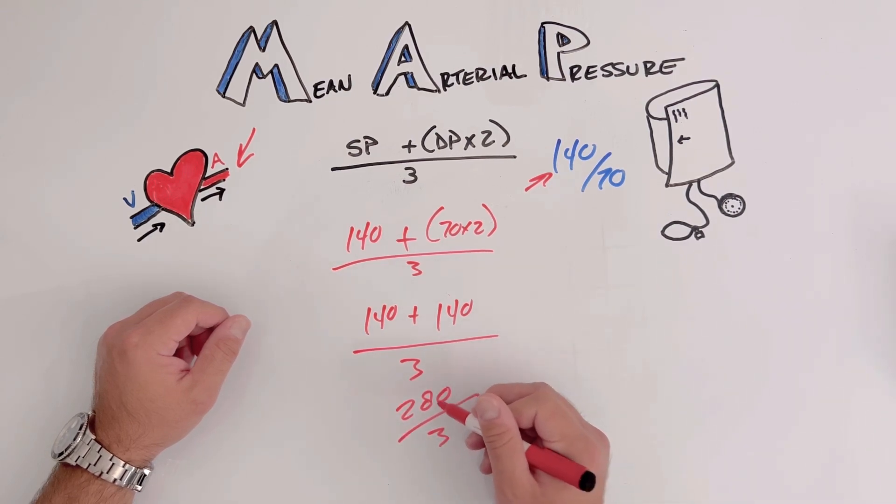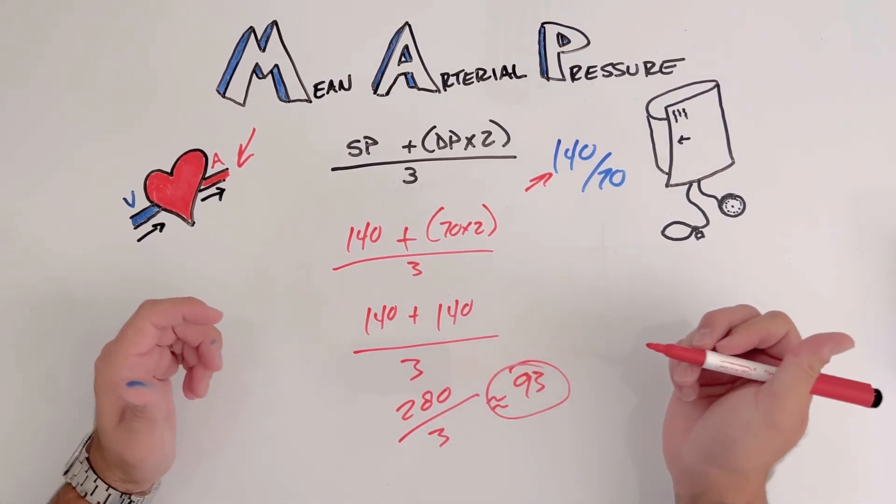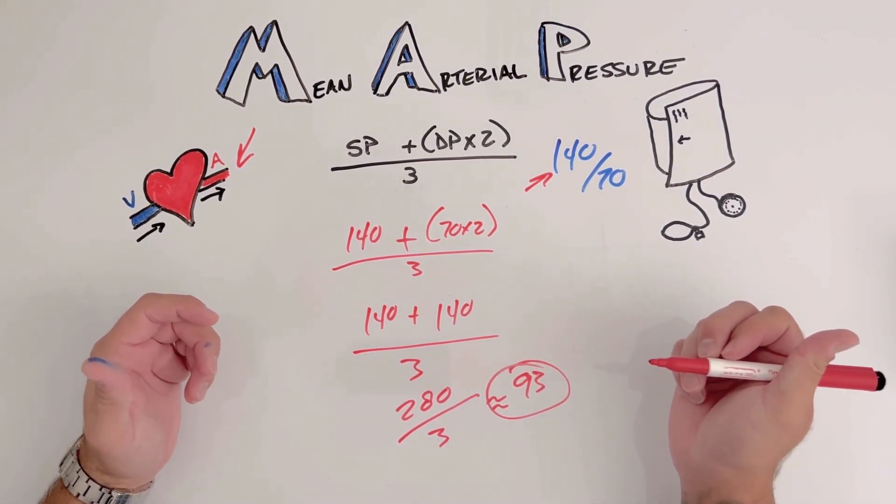Once I divide my 280 by three, I'm going to get around 93 for my MAP. So our patient is probably perfusing well.